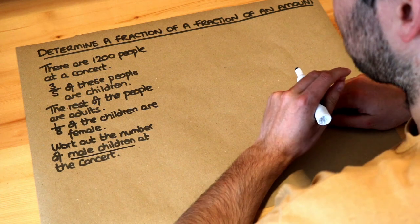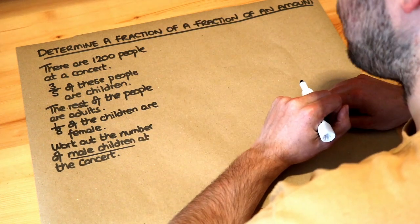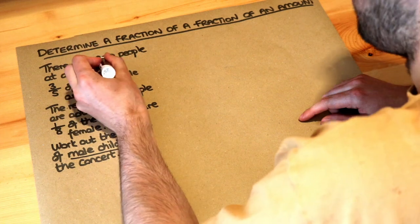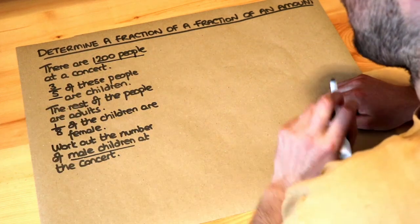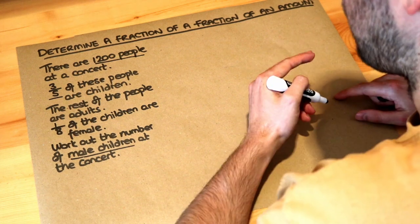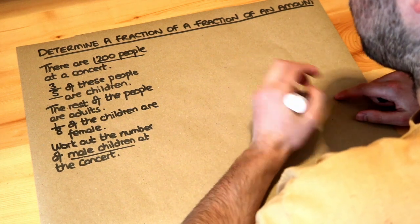Now there's lots of pieces of information here but we just need to deal with it one step at a time. Now we're told for example there's 1,200 people and you're told that three-fifths of these people are children. So let's work out how many children there are in total first.